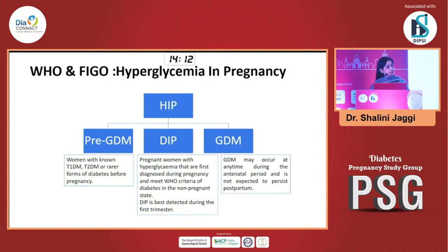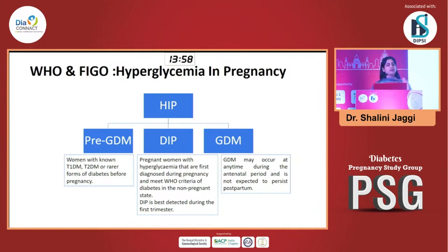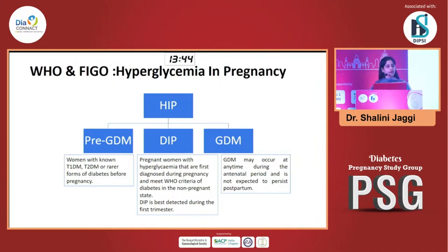Gestational diabetes, as I said, is dysglycemia at any time in the antenatal period but not expected to persist postpartum, occurring in a woman who did not have pre-conception dysglycemia. So the classification is: pre-gestational diabetes on one spectrum, gestational diabetes on the other, and then first-trimester first diagnosis as diabetes in pregnancy. I think this classification should be very clear to all of us.